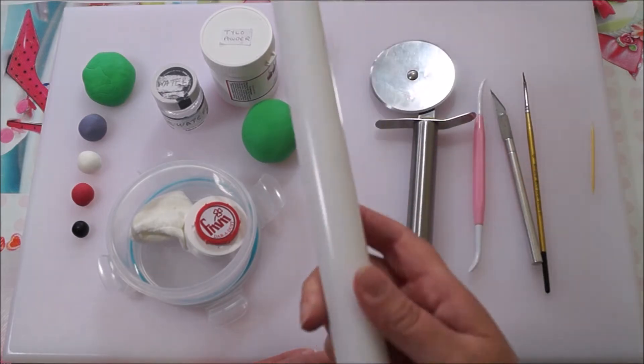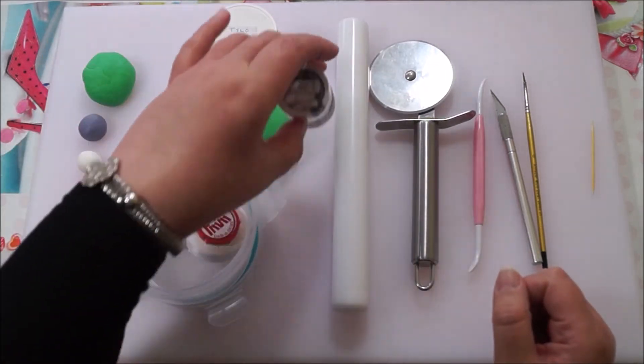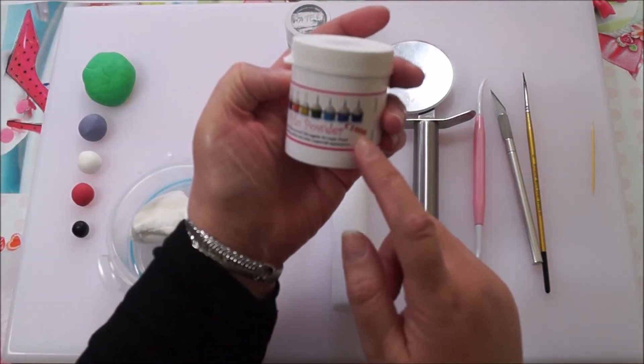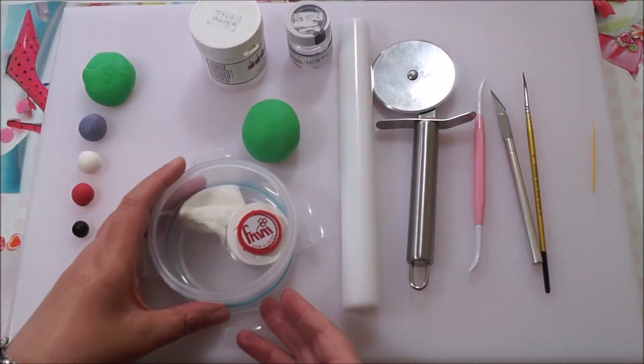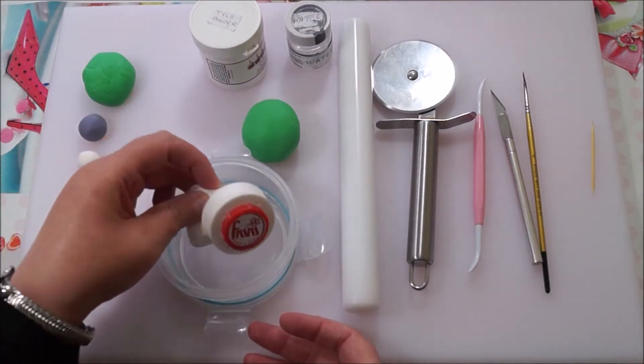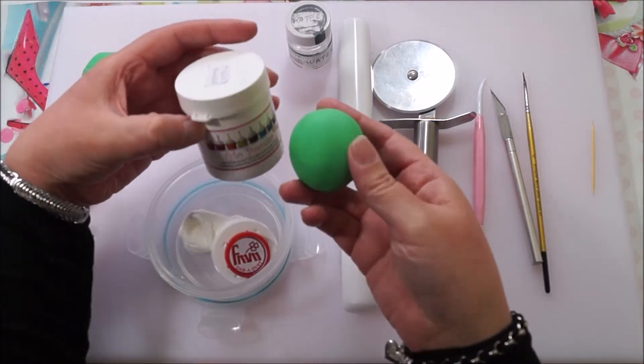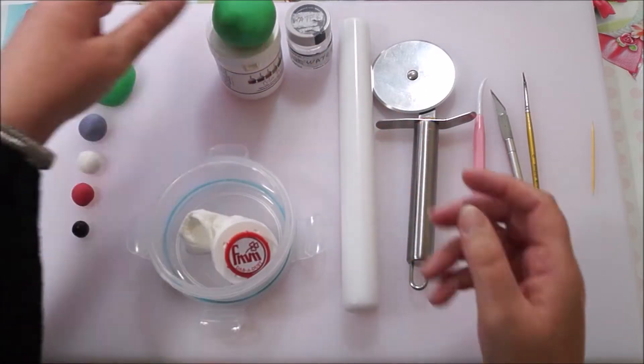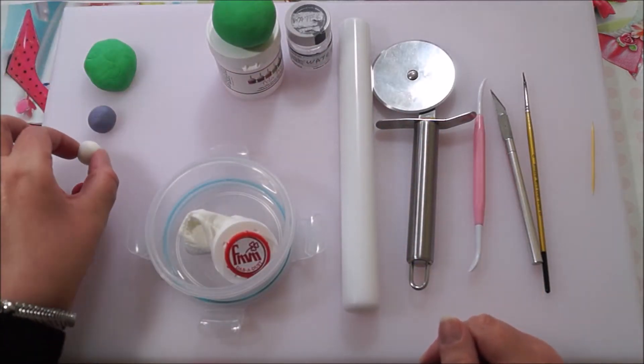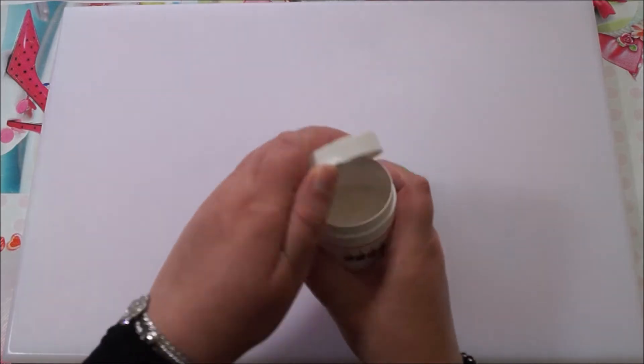You'll need some water, tylo powder grade 1000, corn flour, green fondant to be mixed with your tylo powder, some green fondant on its own, and some purple, white, red, and black fondant.